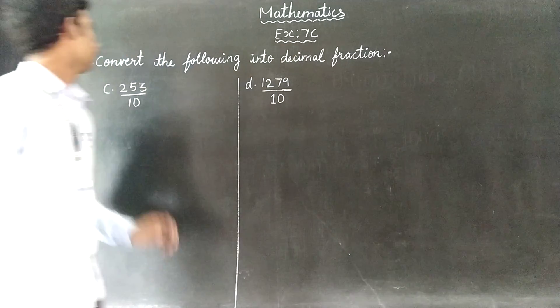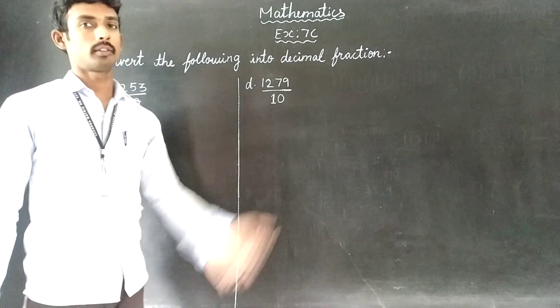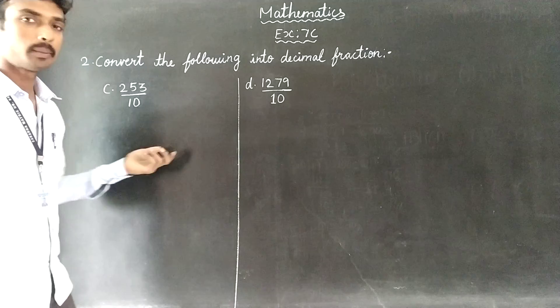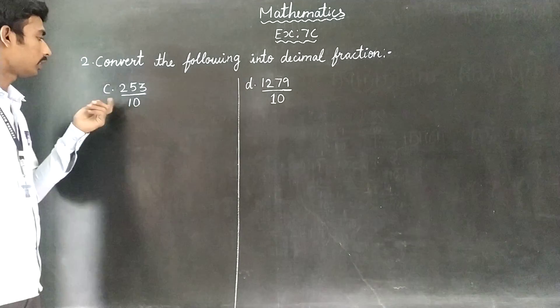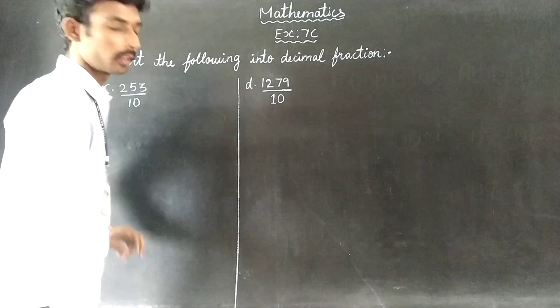Now we are going to do sum number 2: convert the following into decimal fraction. So we are going to put a fraction, decimal fraction answer to the first sum, 253 by 10. And the second one is 1278 by 10.